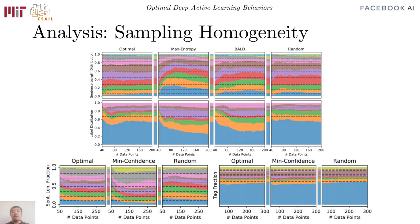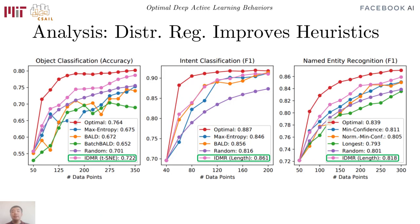The same trend also holds for both intent classification on top and name entity recognition on bottom. Finally, using this finding, we're able to consistently improve various heuristics with a regularization that enforces the distribution matching property during the acquisition.